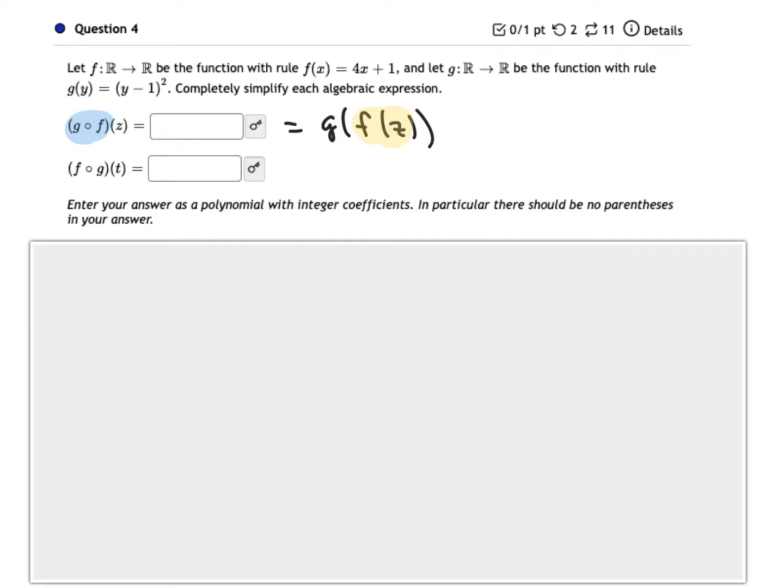So when we see g of f of z, that means that we're performing the function f of z and then performing the action of g on that. So f comes first and then g in how we're evaluating it, even though the notation says g circle f.